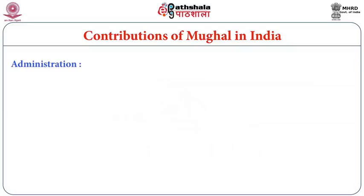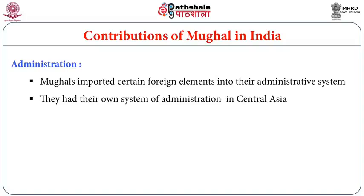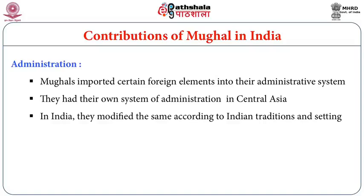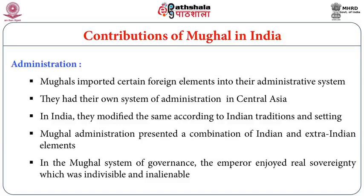In administration, the Mughals imported foreign elements into their system from Central Asia and modified it according to Indian tradition. The emperor enjoyed real and inalienable sovereignty. Babur used gunpowder for the first time in the First Battle of Panipat in 1526. Though gunpowder was invented in China and reached India in the 13th century for mining, it was Babur who invited experts from the Ottoman Empire to use it in warfare, including at the battles of Panipat and Khanwa.